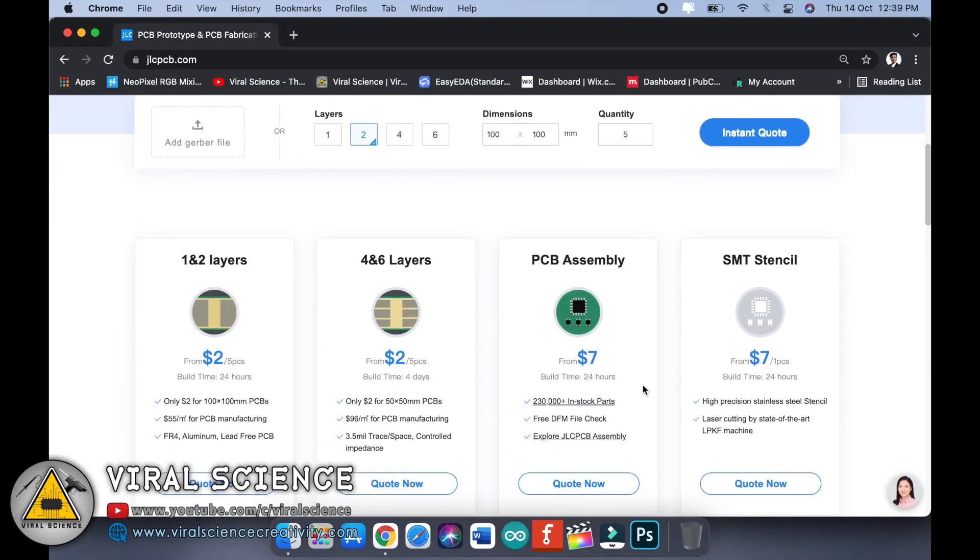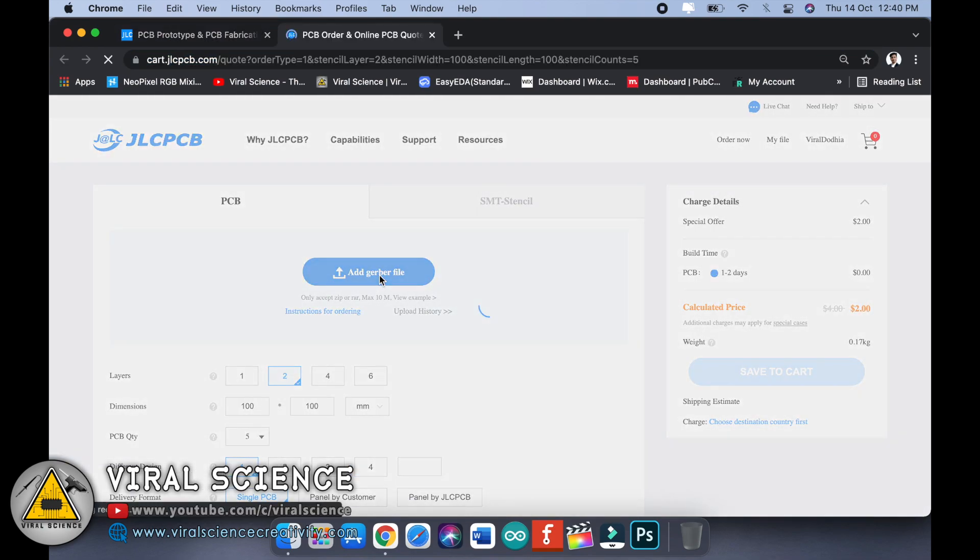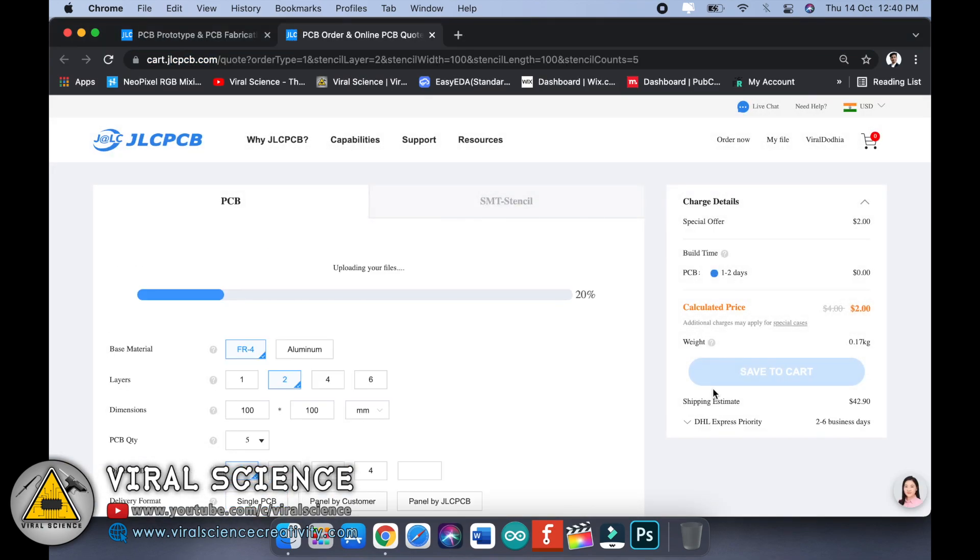So to order this PCB we have to visit JLCPCB.com. JLCPCB.com is also the sponsor of this project and provides good quality PCBs at very cheaper rates. Visit JLCPCB.com, sign in with your ID, click on quote now, and add your Gerber file over here. The links for the Gerber file will be on my blog.